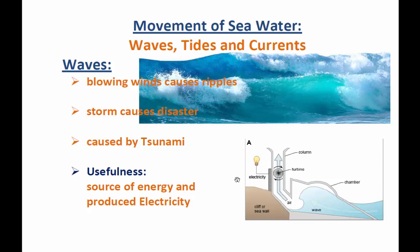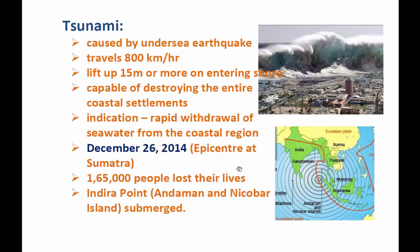Tsunamis are a very destructive type of wave. They are usually caused by undersea earthquakes — earthquakes that happen beneath the seabed. The intensity of a tsunami is very, very strong: it travels about 800 kilometers per hour and lifts up waters of 15 meters or more when it reaches the shore.